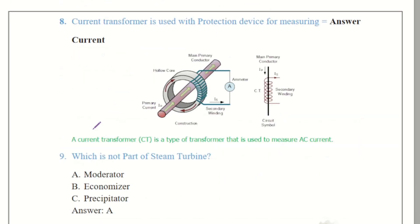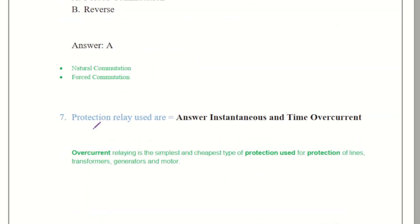Seventh question were over there that were the protection relay used. So the over current relaying is the simplest and cheapest type of protection used for protection of lines in the transformers, generators and motors. So the answer is instantaneous and time over current.